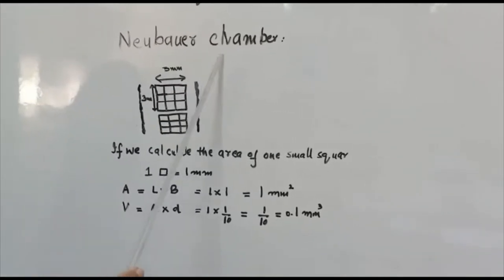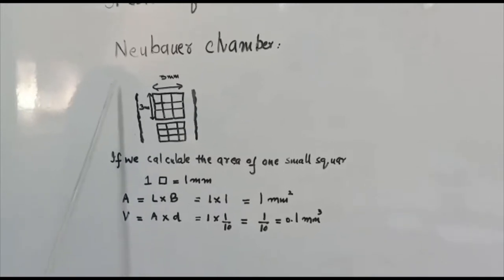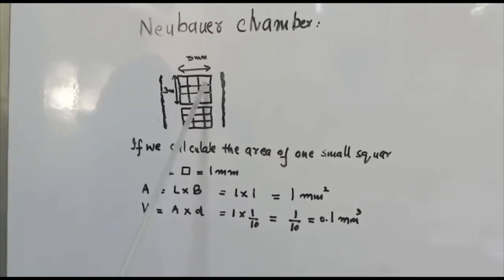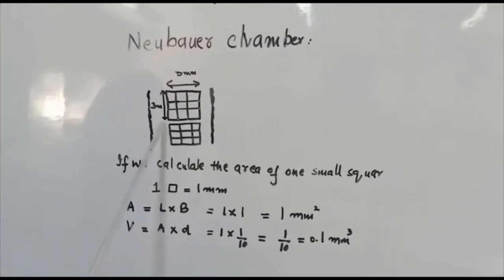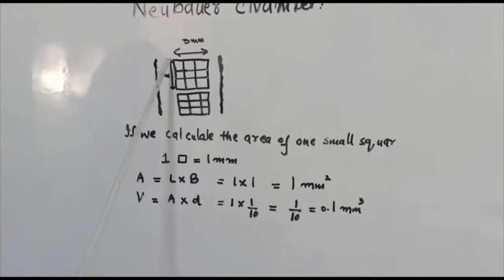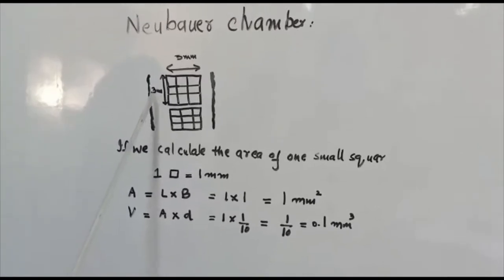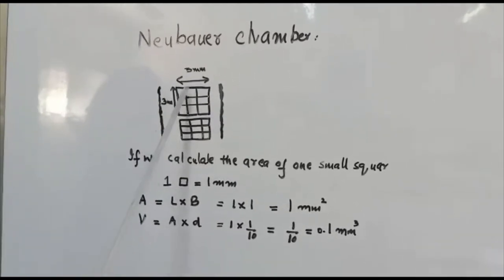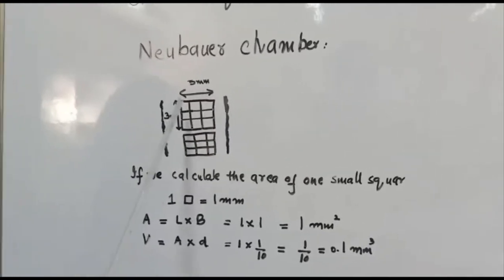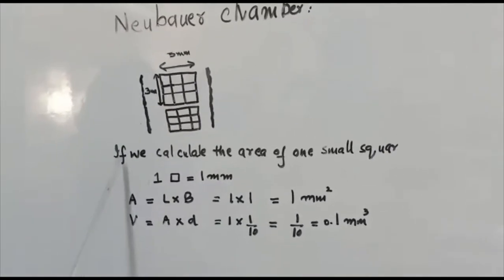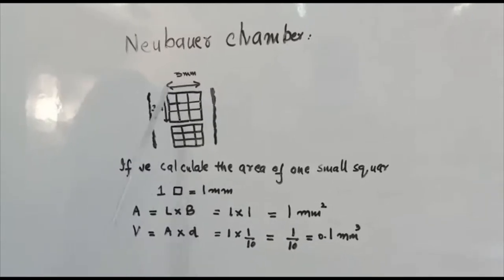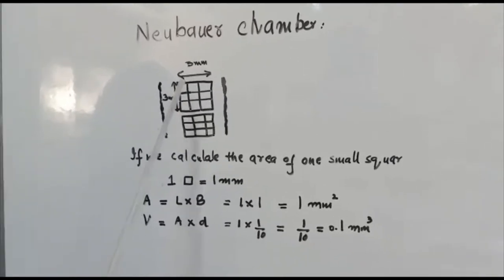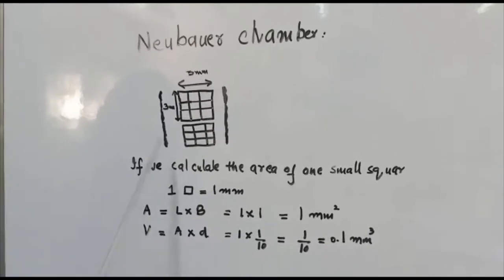If we see the Neubauer chamber under the microscope, we can see a grid. The Neubauer chamber is divided into 3 small squares in the horizontal direction and 3 small squares in the vertical direction on each platform. The size of 3 small squares equals 3 millimeters, which means 1 small square equals 1 mm. So if we calculate the area of 1 small square, it is 1 mm × 1 mm = 1 mm².